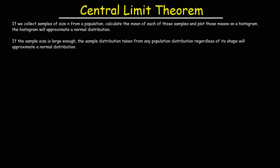In this video, we're going to talk about the Central Limit Theorem. The basic idea behind the Central Limit Theorem is this: let's say we collect samples of size n from a population, calculate the mean of each of those samples, and then plot those means on a histogram. The histogram will approximate a normal distribution.